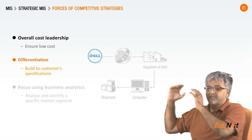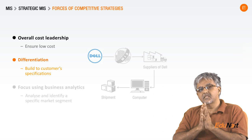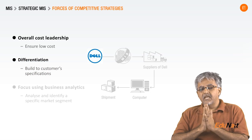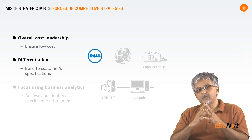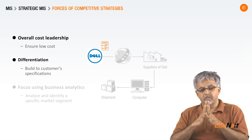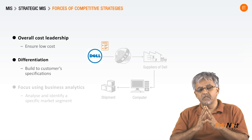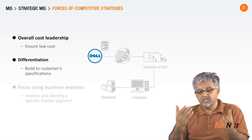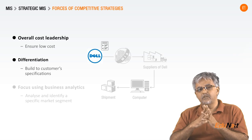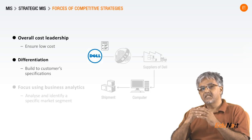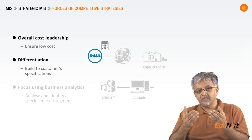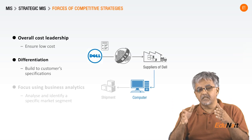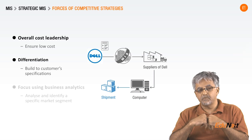A second strategy is differentiation — how do your products differ from those of the competition? Dell computers introduced the idea of build to order: you can customize the computer you buy to your specific needs. Rather than buying what's in the store, you buy a computer exactly to your specifications. You place an order, the information is immediately transmitted to the supplier, they build a computer to your specifications and ship it to you.